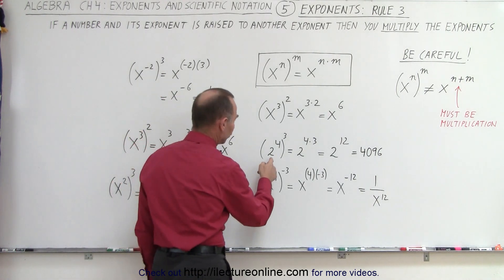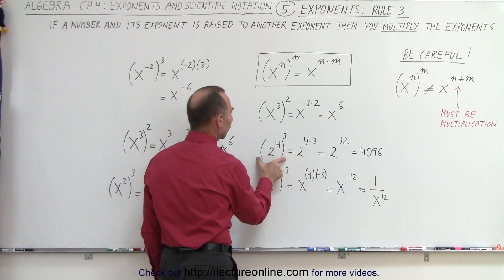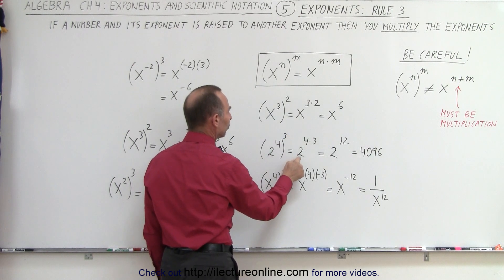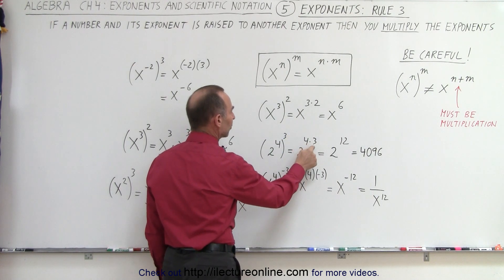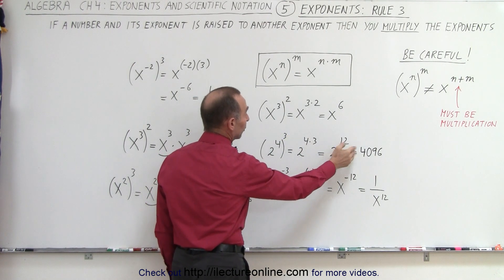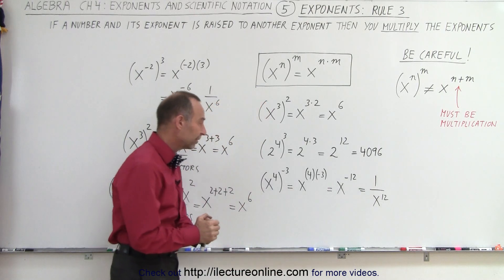So here we have an example: 2 raised to the fourth power, and the whole thing raised to the third power. That's simply 2 to the fourth times 3, or 2 to the twelfth power, which, by the way, is 4,096.